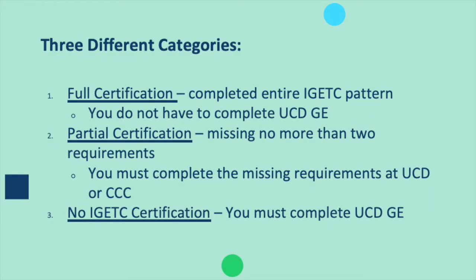First, let's look at general education or GE requirements, specifically IGETC, which stands for Intersegmental General Education Transfer Curriculum, which is only available from a California community college. There are three different categories. Full certification means you completed your entire IGETC pattern and do not have to complete UC Davis GEs. Partial certification means you are missing no more than two requirements and must complete them at UC Davis or your California community college. No IGETC certification means you must complete all UC Davis GEs.